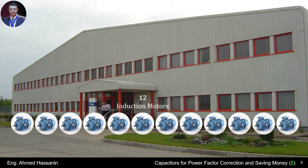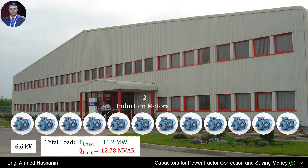This factory contains 12 induction motors. A technical study and measurements of the factory were carried out, and it was found that the rated voltage of the induction motors is 6.6 kilovolts. The total maximum active power P-load equals 16.2 megawatts, the maximum reactive power Q-load equals 12.78 megavars, and the total power factor for all induction motors is 0.785.